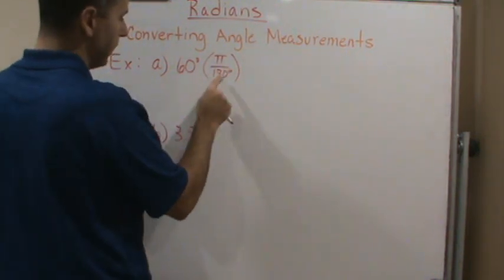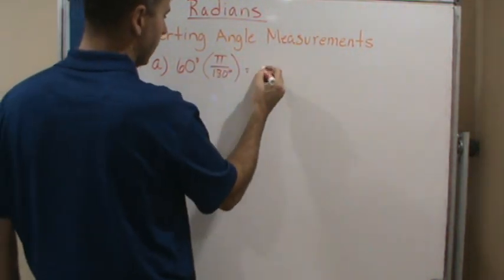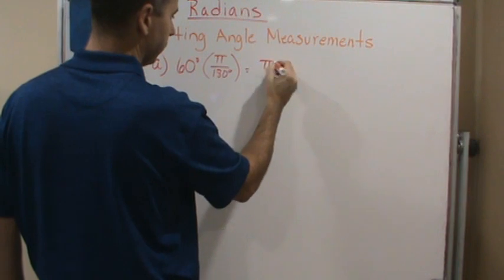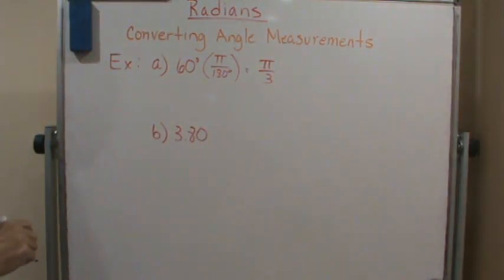So anyway, so now 60 degrees times this is going to give us what? Pi over 3. And that's assumed to be radians.